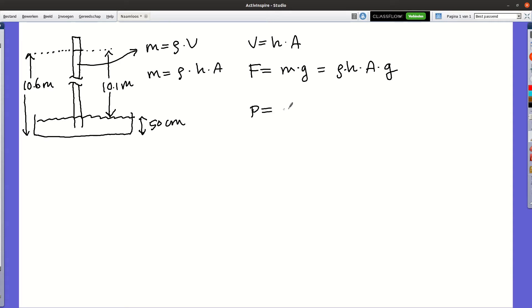The pressure of the water column is F divided by the surface area it's pressing on. So, rho times h times A times g divided by A. And the areas cancel. So, the pressure is equal to rho times h times g.